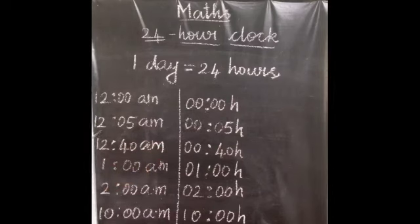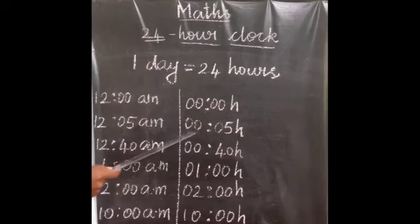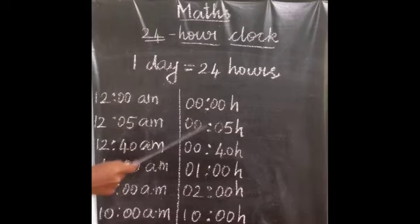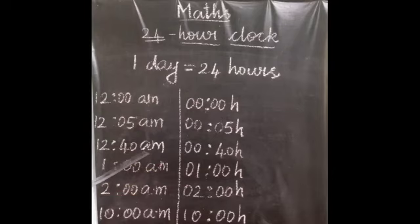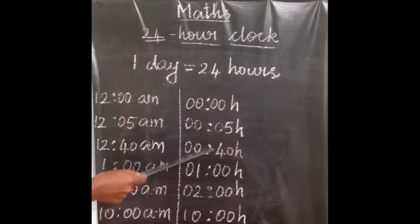If the time is 12:05 AM, we will write it as 00 hours, colon, then 5 minutes - so 00:05. Then, if the time is 12:40 AM, we will write it as 00:40.